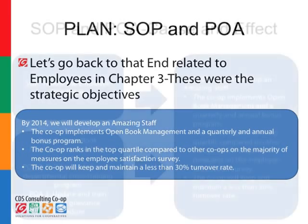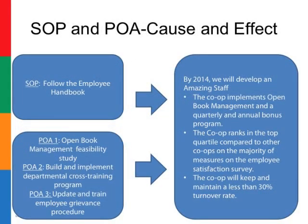How does this all fit? The cause and effect. Here's the effect: we just went through those three different outcomes we're trying to achieve by 2014. SOP: follow the employee handbook — keep things the same, keep within those guidelines. POA number one: implement open book management feasibility study — a project to help make the effect of having open book management in place. POA two: build and implement departmental cross-training programs, which will ultimately help with the amazing staff. And POA three: update and train employee grievance procedure — a clear start and finish, which will ultimately lead to the desired effects.